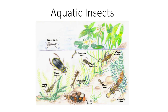Every inland water body, whether a river, stream, or lake, supports a biological community. The most familiar components often are the vertebrates, such as fish and amphibians. However, at least at the macroscopic level, invertebrates provide the highest number of individuals and species and the highest levels of biomass and production.